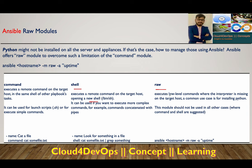The raw module is basically a low-level command used when an interpreter like Python is missing on the target host.